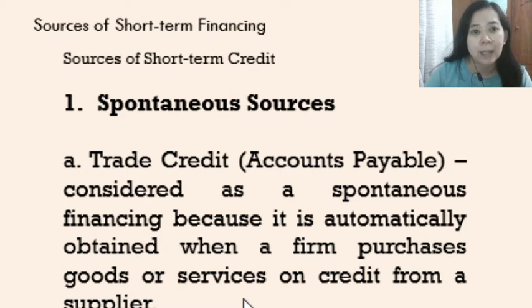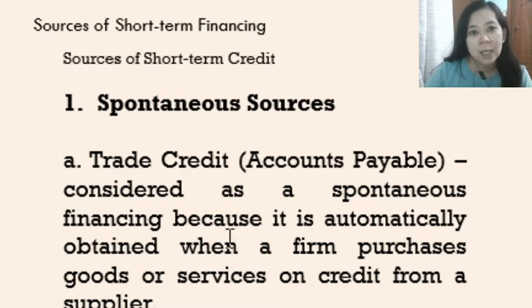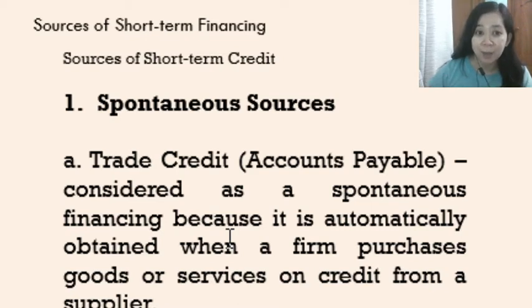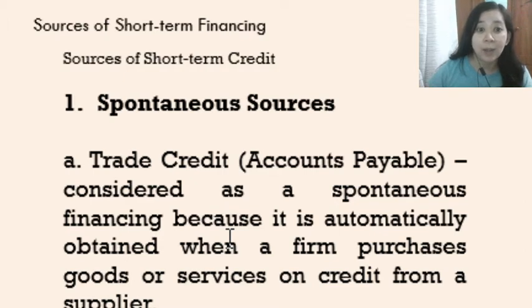The first source is the spontaneous sources. Under spontaneous sources, we have first the trade credit, also known as accounts payable. This is considered to be spontaneous financing because it is automatically obtained when a firm purchases goods or services on credit from their supplier.